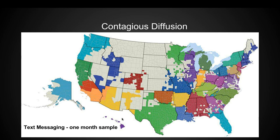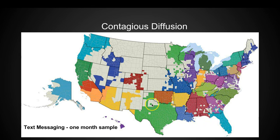For contagious diffusion, we look at text messaging and how it spread through contagious diffusion. You can see how everybody in Texas is text messaging. When it originated in Oklahoma, everybody starts getting it. Think of it like a contagious virus that initiated in Texas and then spread contagiously throughout the region — everyone is at risk of getting it. This shows text messaging through a one-month sample in each of these states.